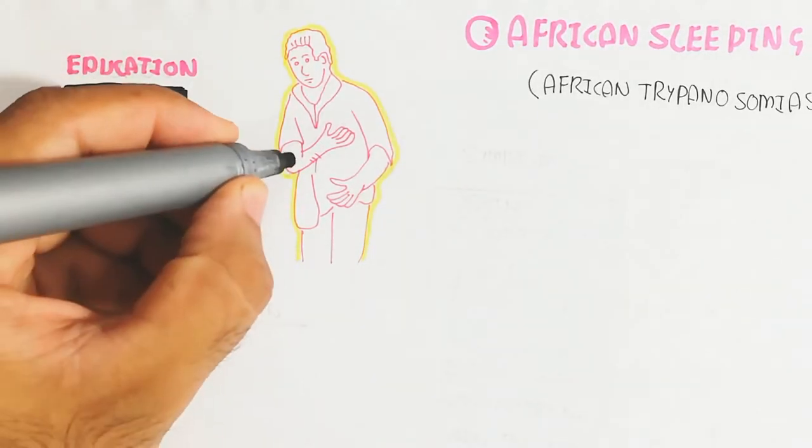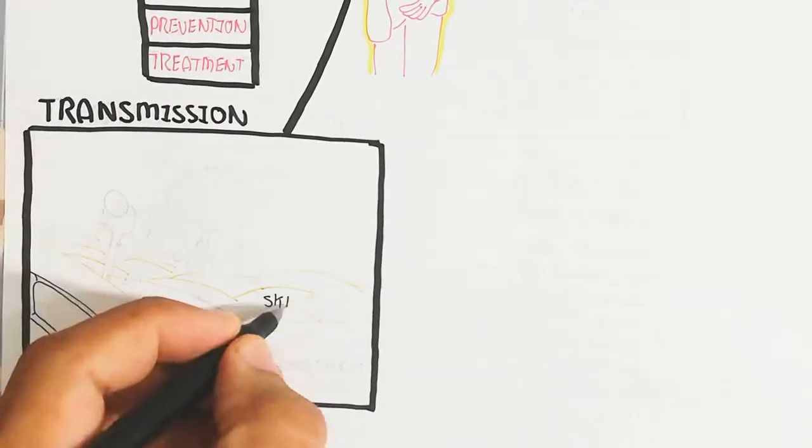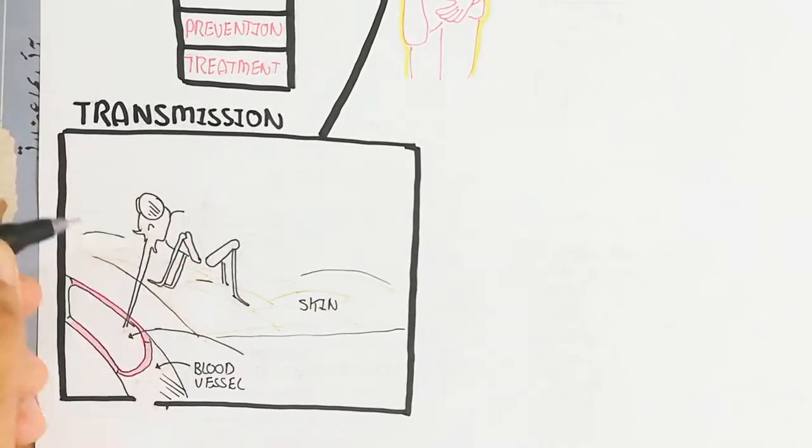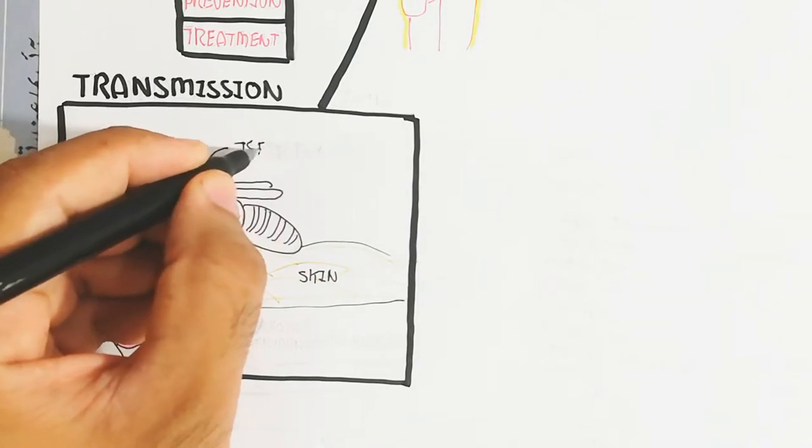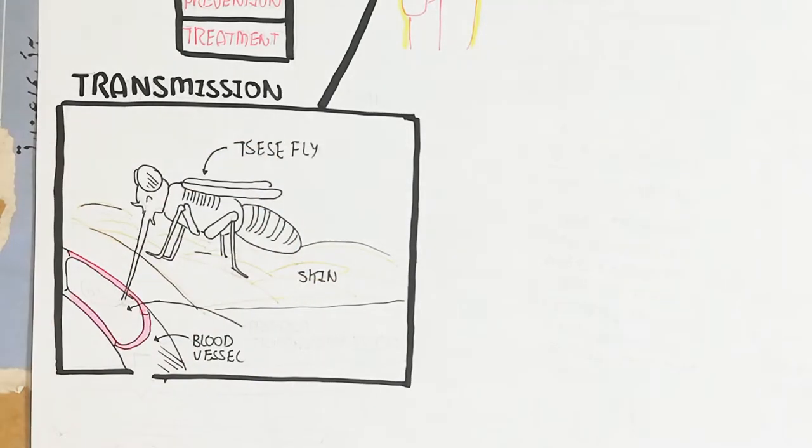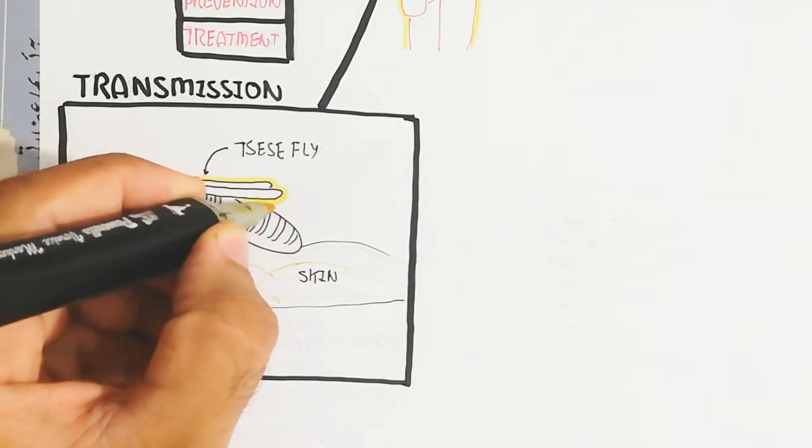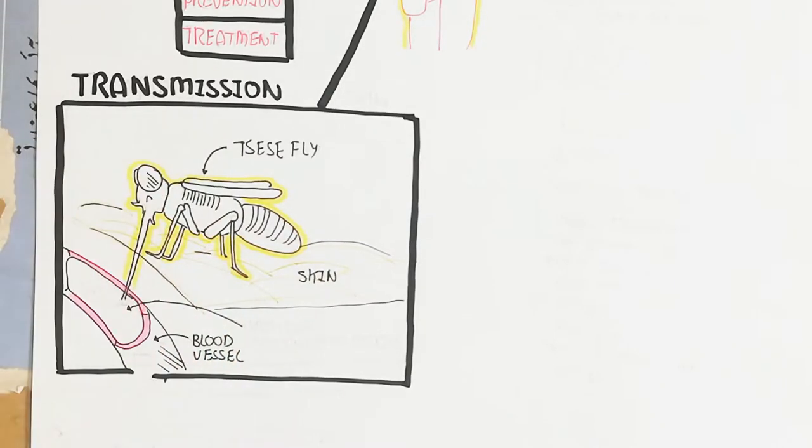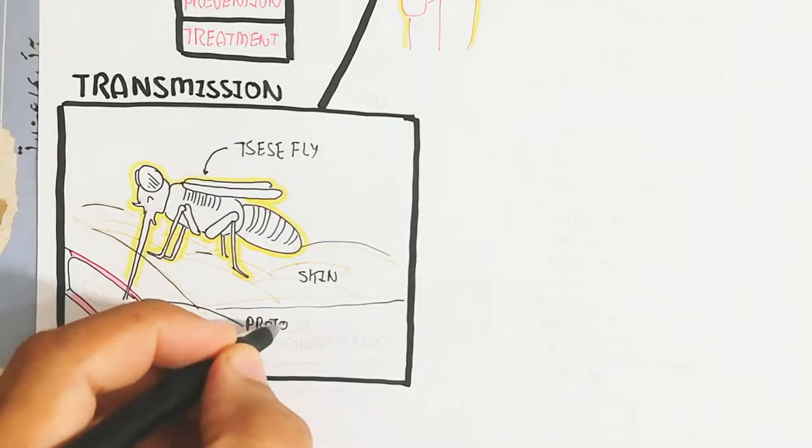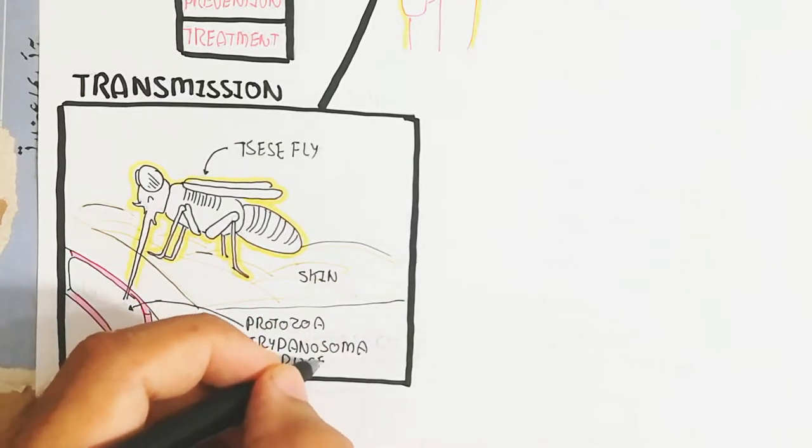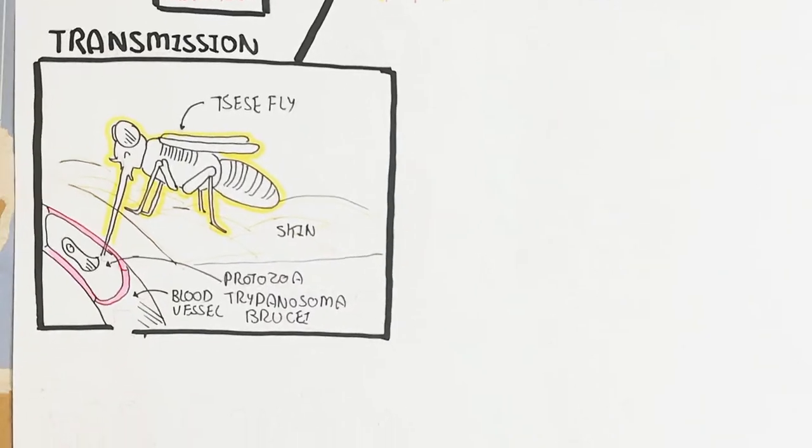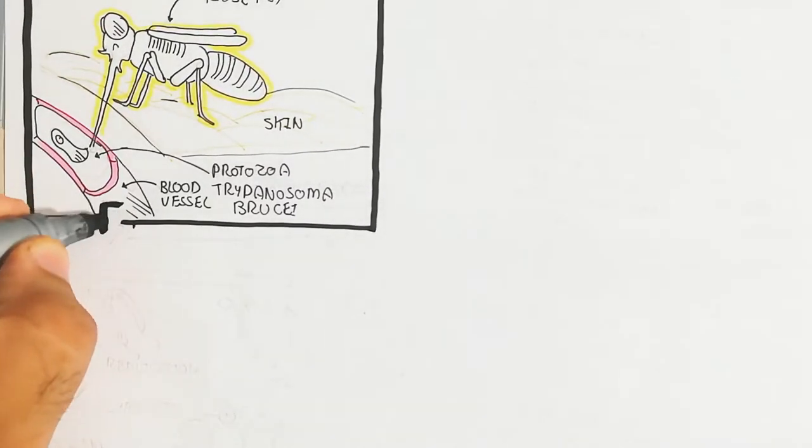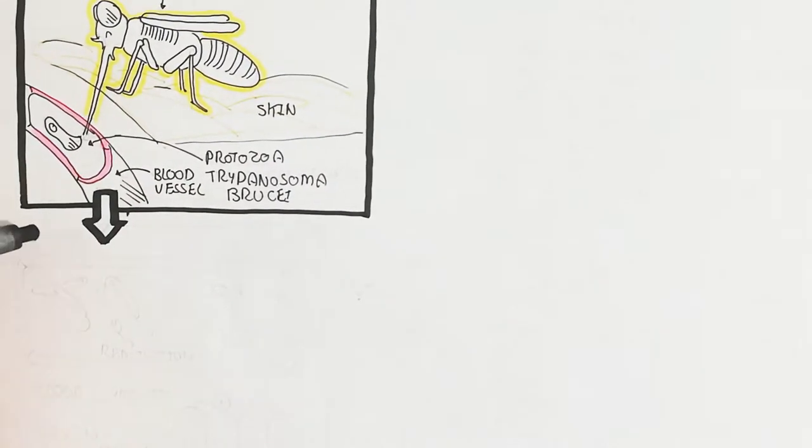Transmission occurs through a tsetse fly bite. Their saliva contains protozoa known as Trypanosoma brucei or Trypanosoma rhodesiense, which are different species. The Trypanosoma brucei enters during feeding through the tsetse fly.